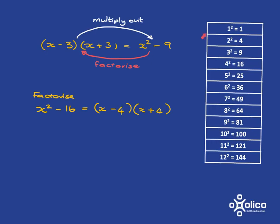So the reason I've put this little table on the side is it's going to be very helpful if you know this table really well. Because then if you see x squared minus 81, for example, you'll immediately know that it was x minus 9, x plus 9.